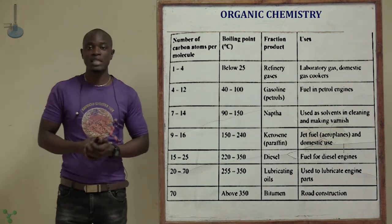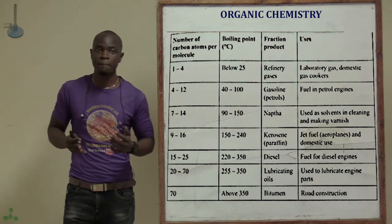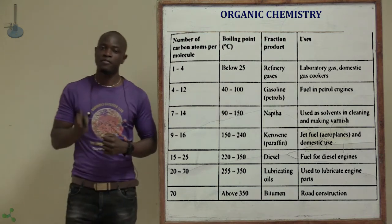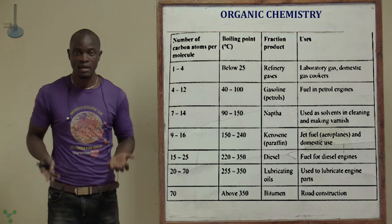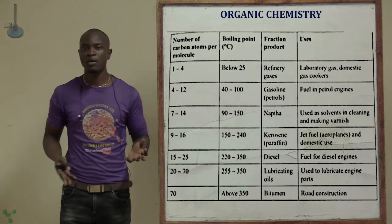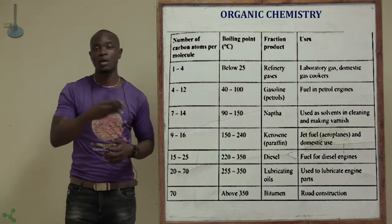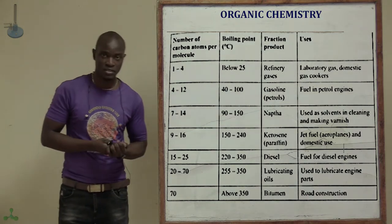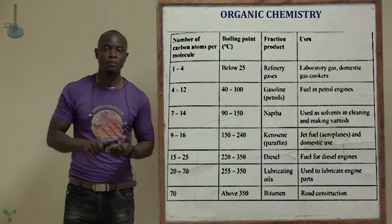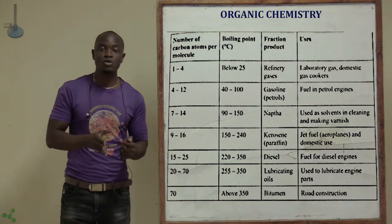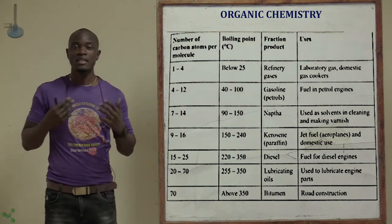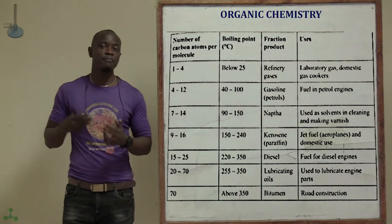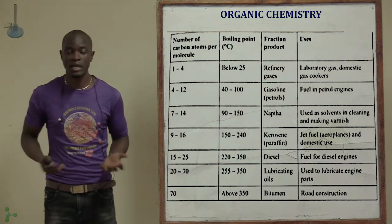There is also a summary table showing the number of carbon atoms and their uses. From carbon number 1 to carbon number 4, the hydrocarbons are mainly used as gases — methane for cooking, biogas for various uses — with boiling points below 25 degrees Celsius. From carbon number 12 to 14, the boiling point averages about 70 degrees Celsius, and these are mainly used as fuel for motor vehicles, automobiles, and machinery.